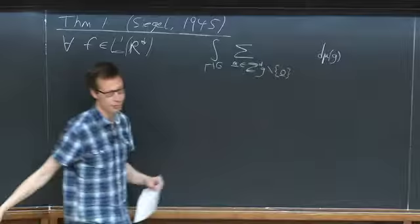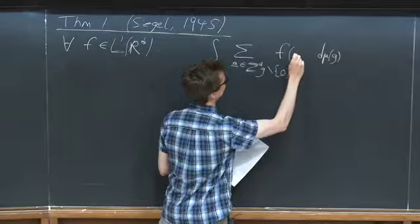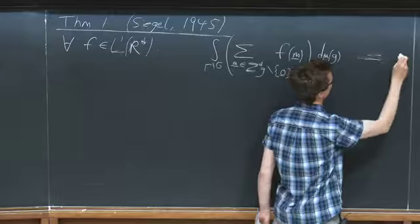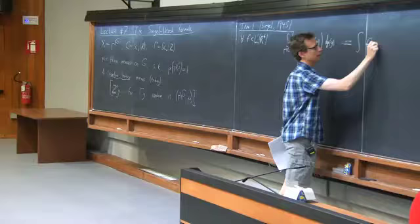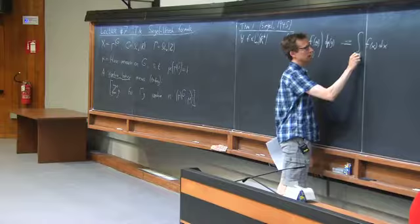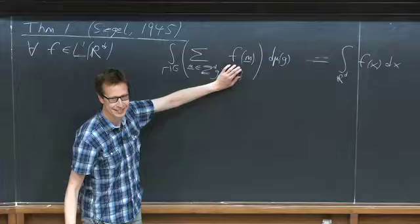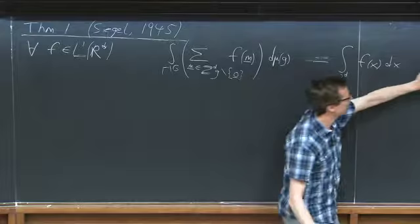The origin will always be there so we may as well remove it. If I include the origin that just adds a term f(0), so it's no complication. Let me also state an equivalent form: for any Borel subset B of ℝ^d, the expected number of points which the random lattice has in B (excluding the origin) equals the volume of B.